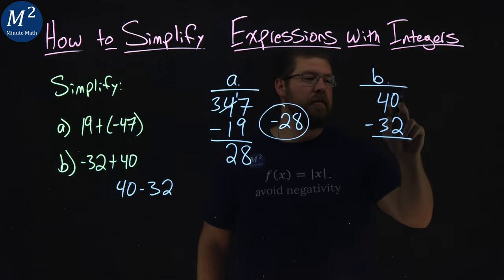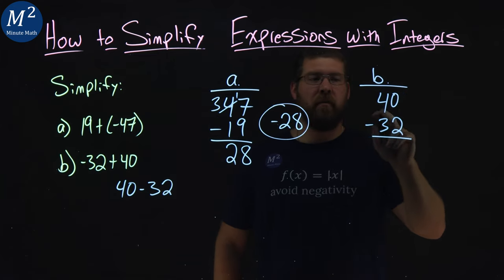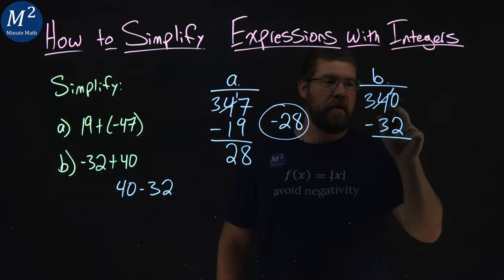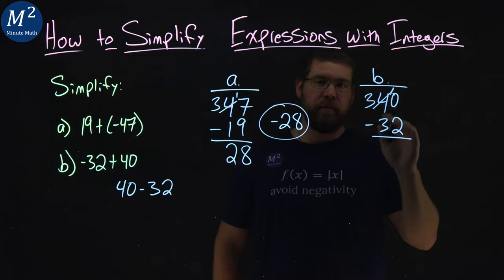Again, same process. 0 minus 2, we can't do that. We've got to draw from the 4. 4 turns into a 3. We've got a 10 there. 10 minus a 2 is an 8.